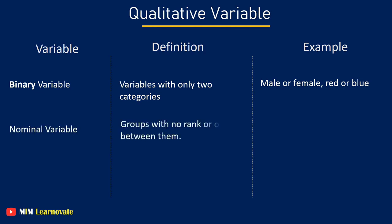Nominal variable - groups with no rank or order between them. For example, species names, brands.